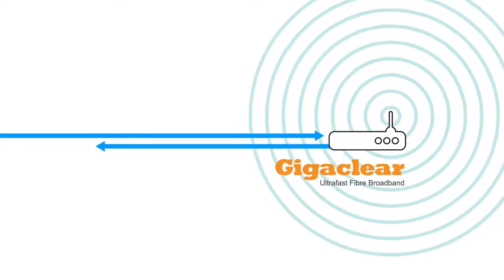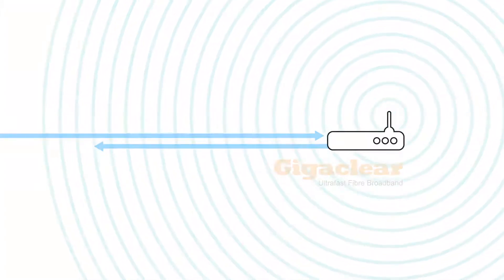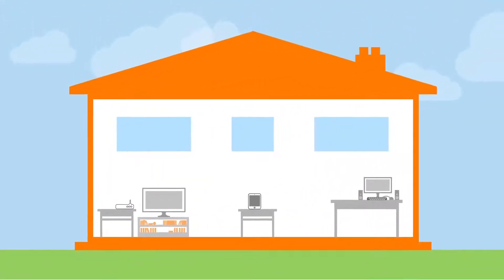GigaClear Pure Fibre Broadband delivers amazing upload and download speeds of up to a thousand megabits per second. The best way to enjoy the full benefits of our Pure Fibre Broadband service around your home is to use Ethernet cables to directly connect your devices to your GigaClear optical router, especially for devices that use a lot of data such as TVs and online gaming consoles.